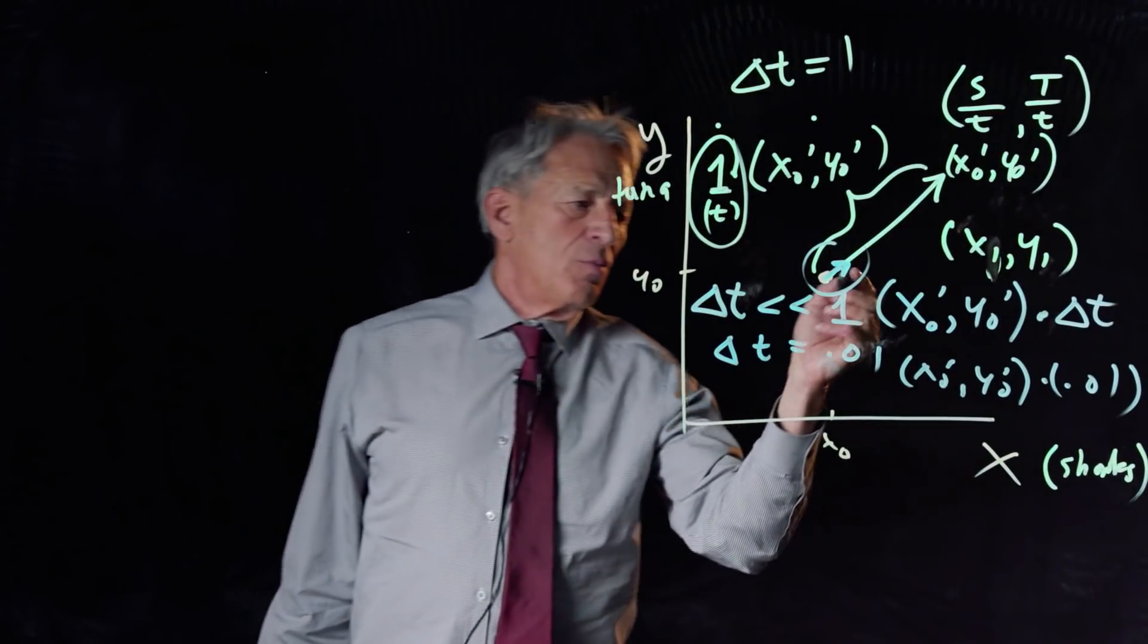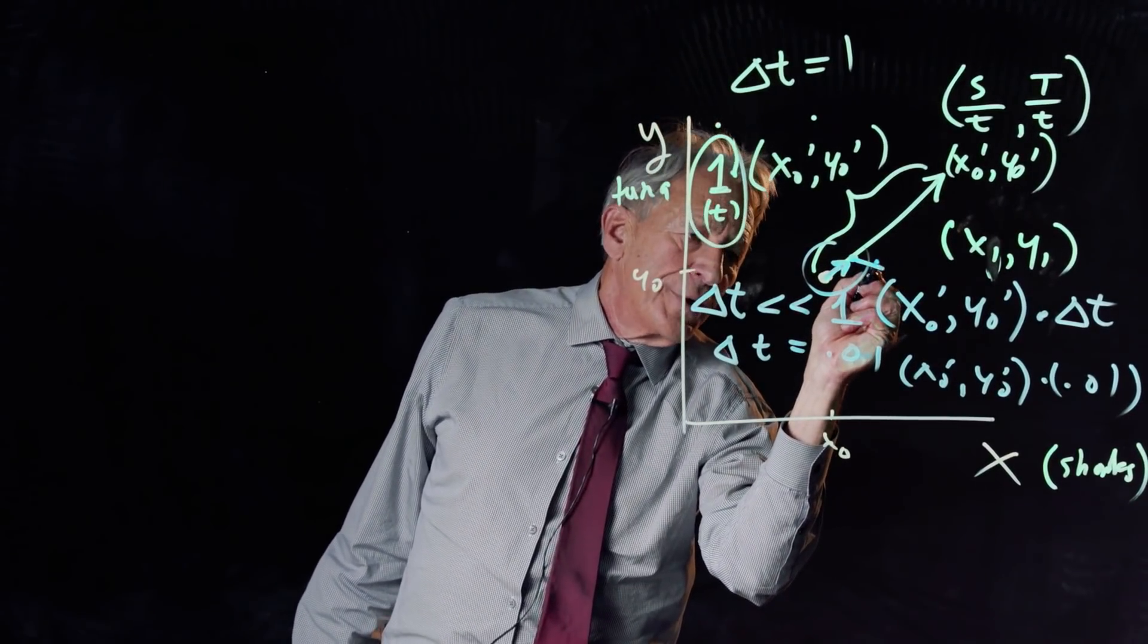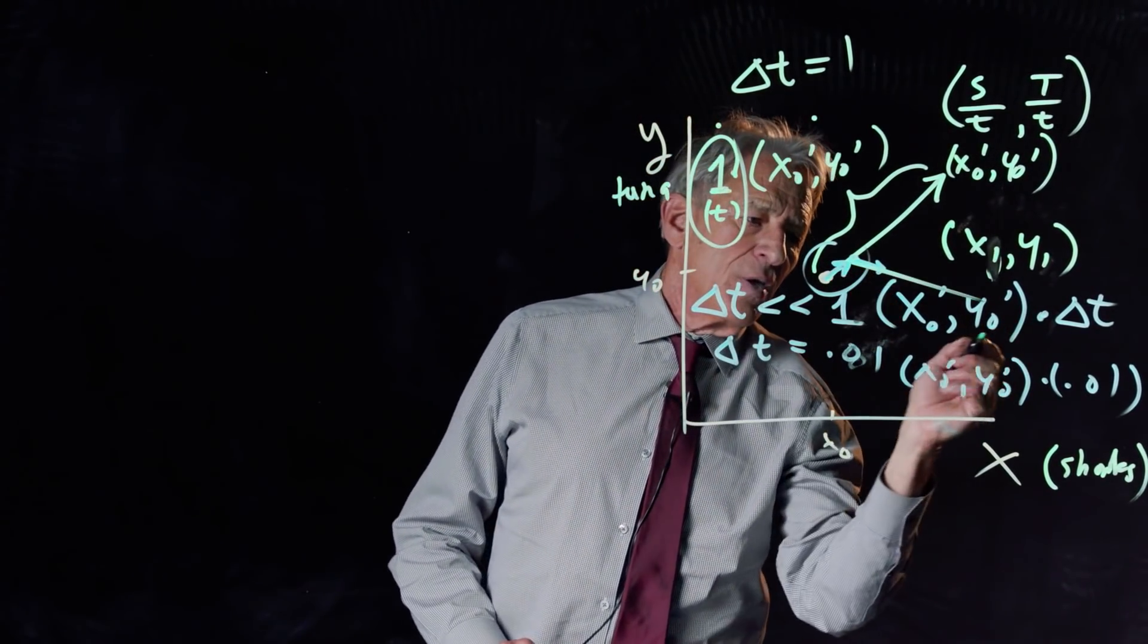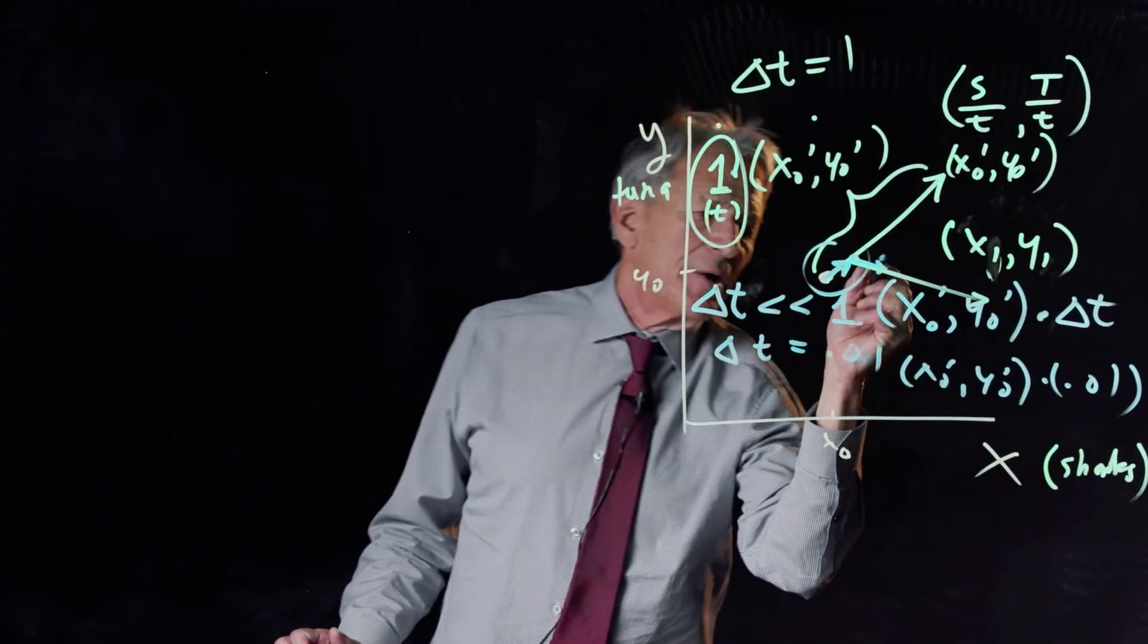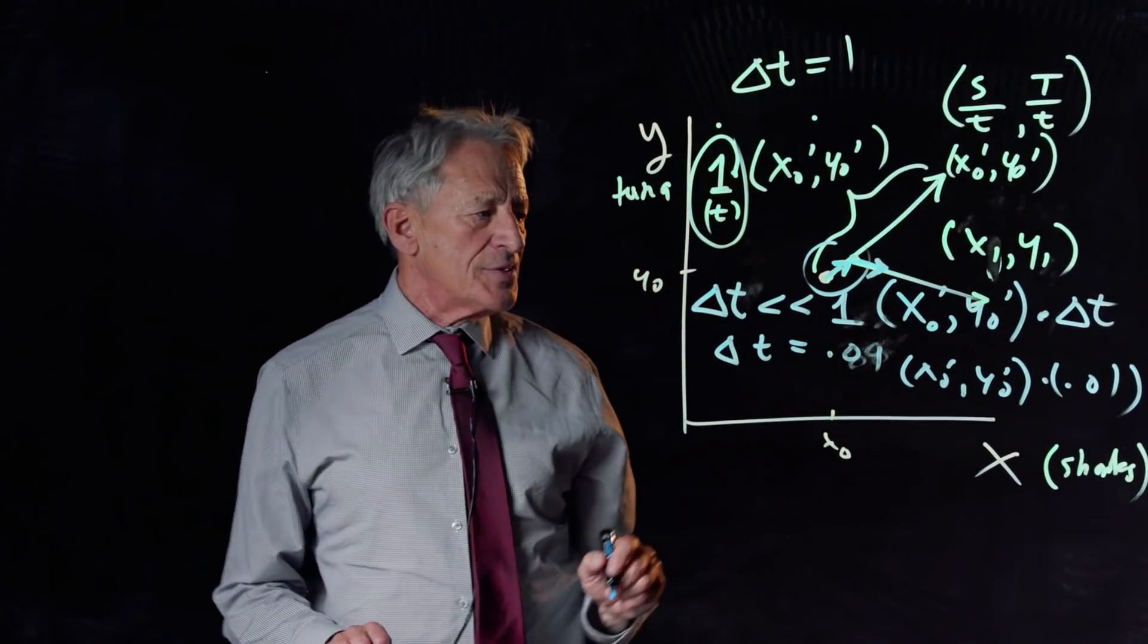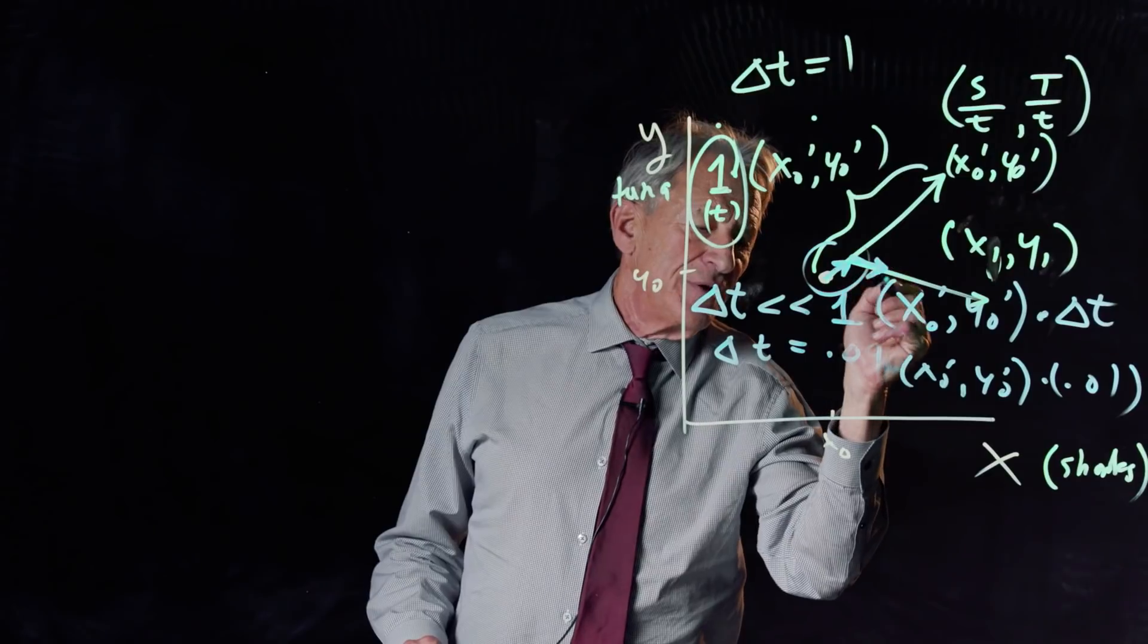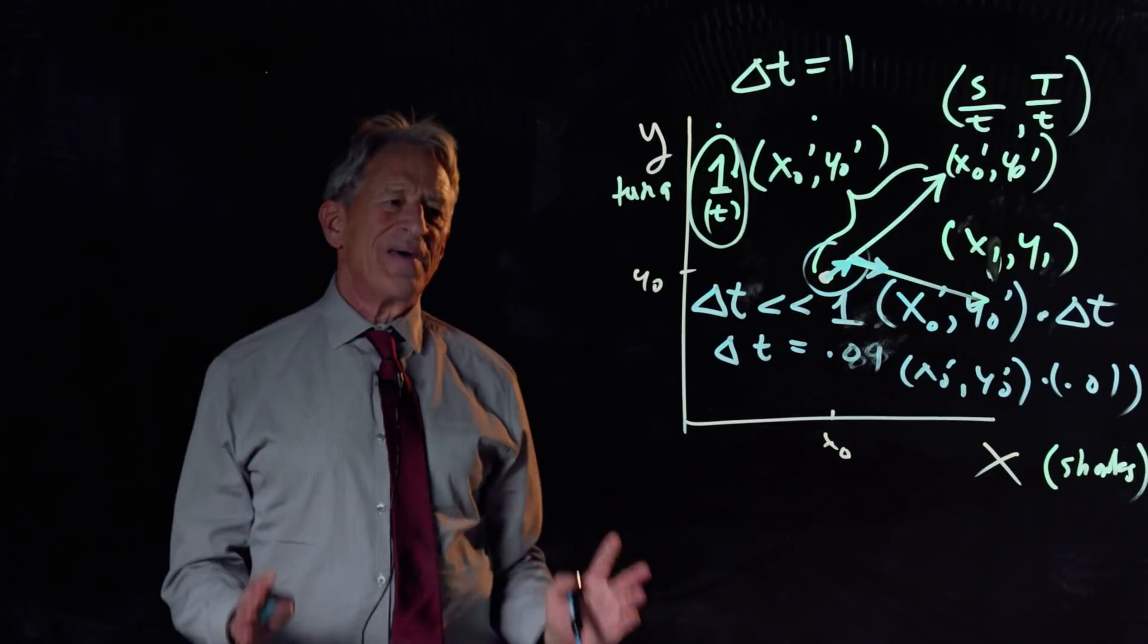So now, we are at a new point, and at the new point, we consult the change vectors again, and let's say the change vector happened to be going in that direction. Then again, we multiply the change arrow by our delta t, which is our dt, as it's sometimes called. We multiply it by a delta t of 0.01, and we get a short little arrow. And as we said, that's Euler's method.